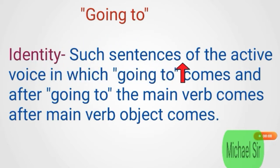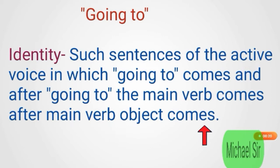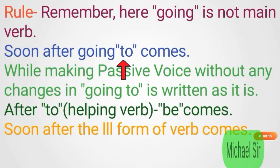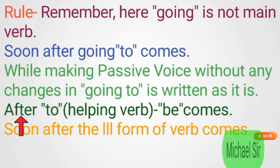To identify active voice sentences where 'going to' is used: after 'going to' the main verb comes, and after the main verb the object comes. Note that here 'going' is not the main verb. When making passive voice, 'going to' is written as it is without any changes. After 'to', the helping verb 'be' comes, and soon after that the third form of the verb comes.